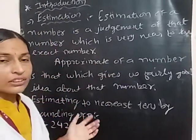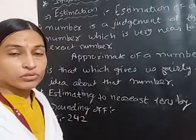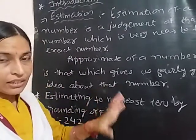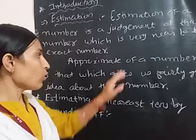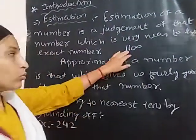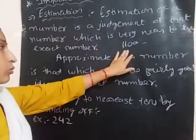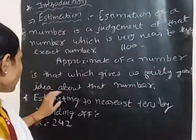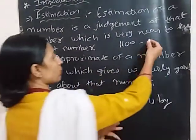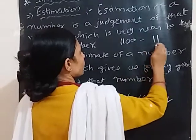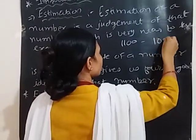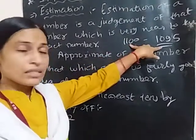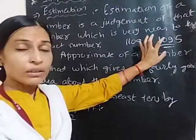For example, in a train, we will say that there are about 1100 passengers. We are thinking that there are so many passengers in the train. The exact number will be 1100 — that is the exact number. Approximate of a number is that which gives us a fairly good idea about that number. We might say there are 1098 or 905 passengers — that is the exact number we estimate.